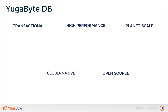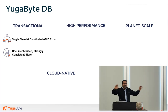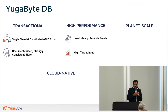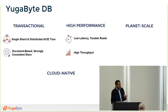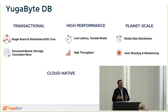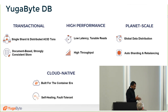YugabyteDB is a transactional database with a document-based, strongly consistent storage engine. It offers both single-shard and multi-shard transactions — so if you need to update two tables on different nodes of a large cluster, YugabyteDB enables those operations. It's designed ground-up for high performance, built in C++, designed for linear scalability, and offers various flavors of consistency levels for a tunable read paradigm. Writes are always strongly consistent.